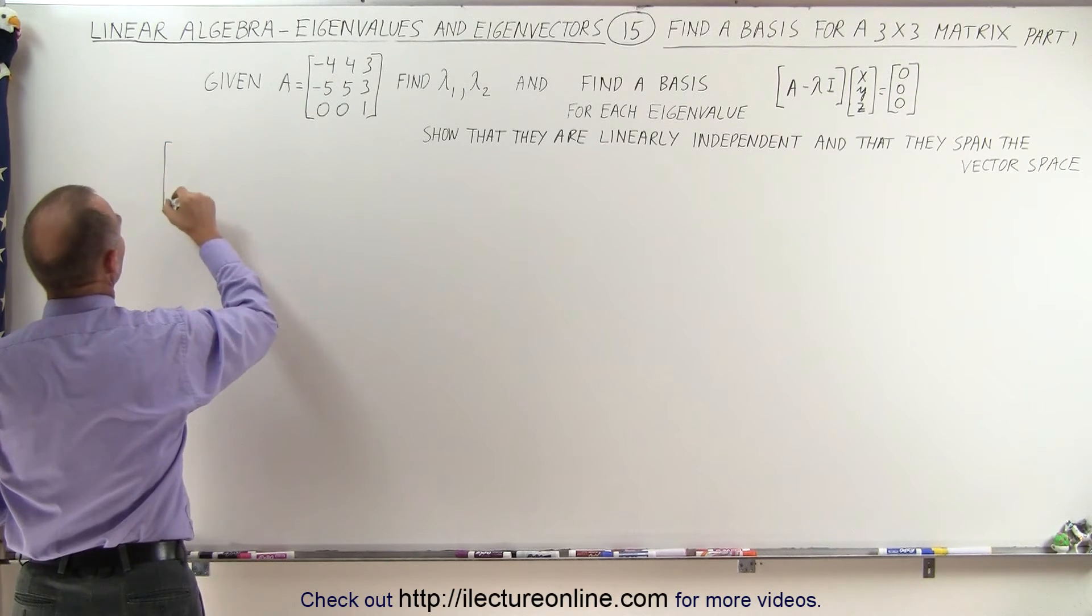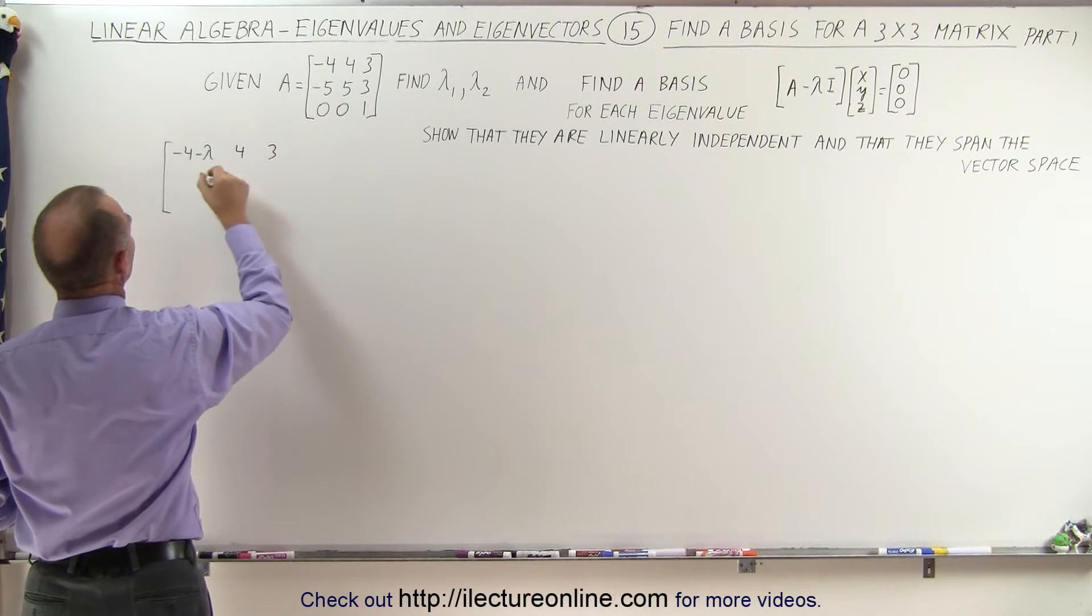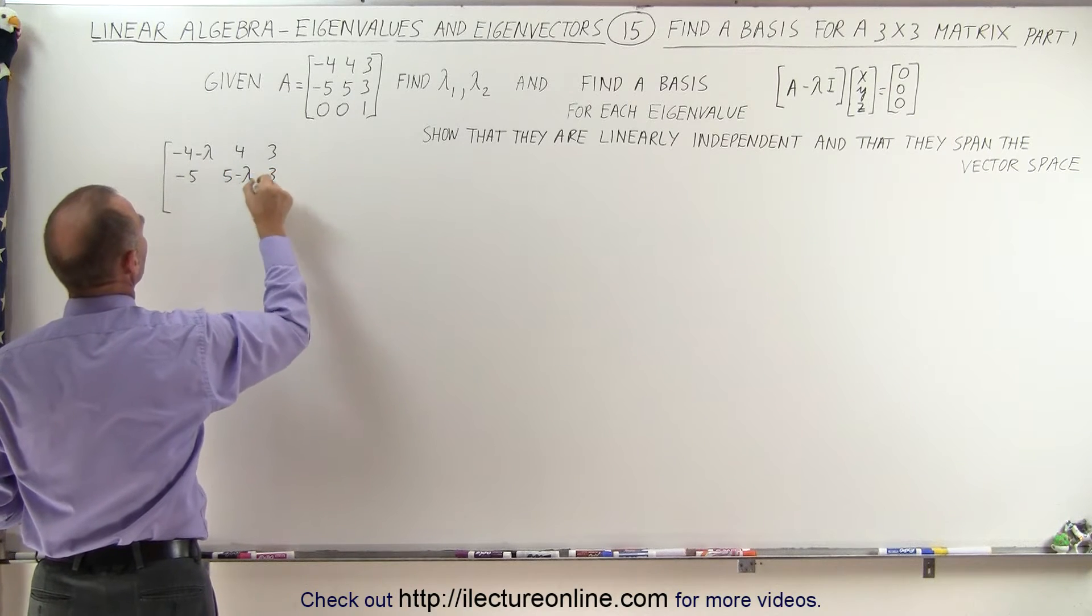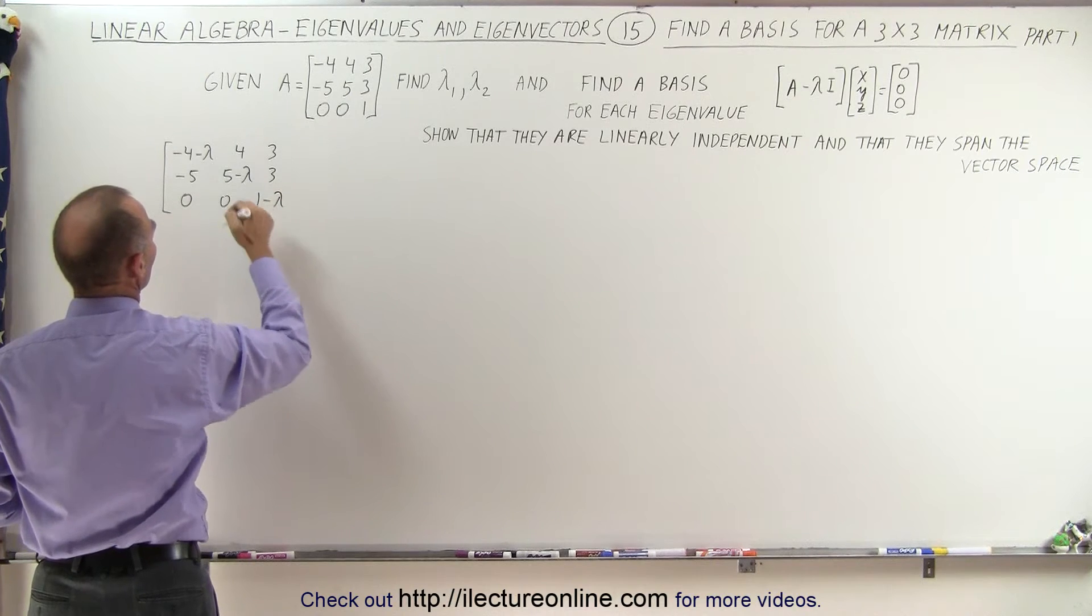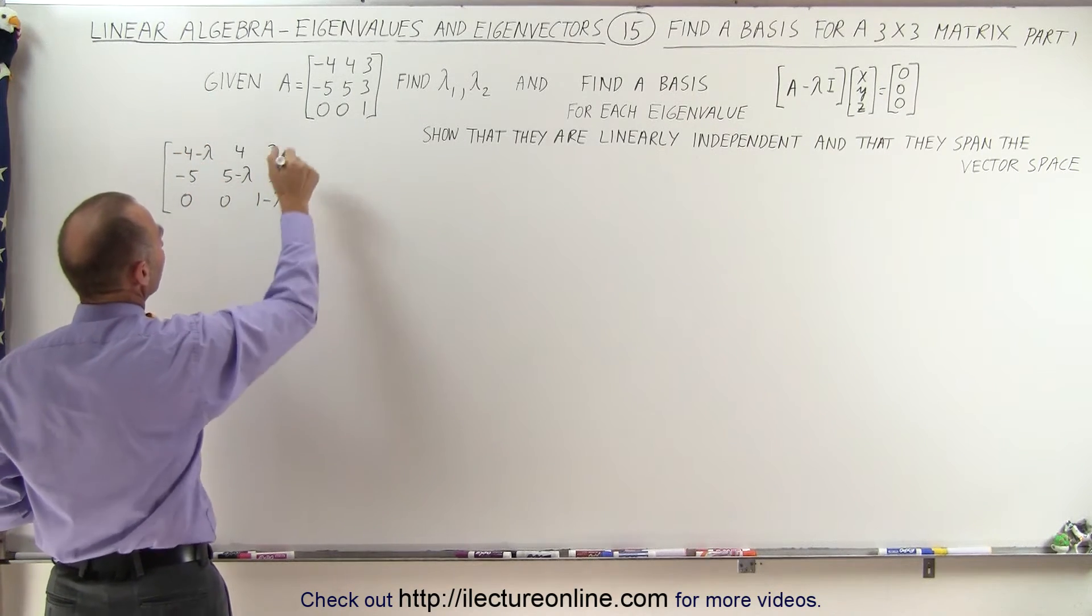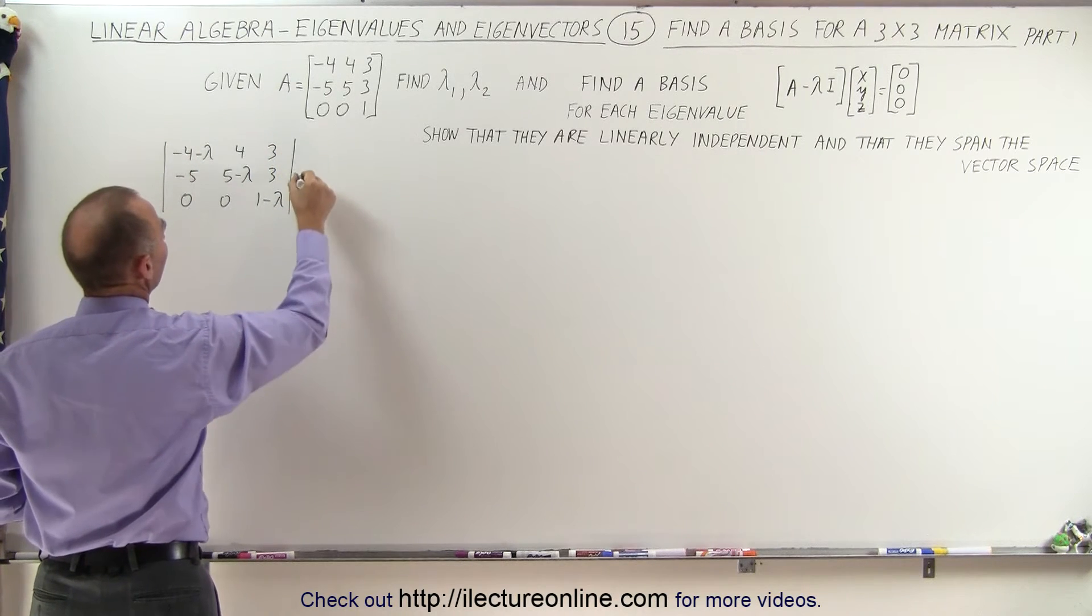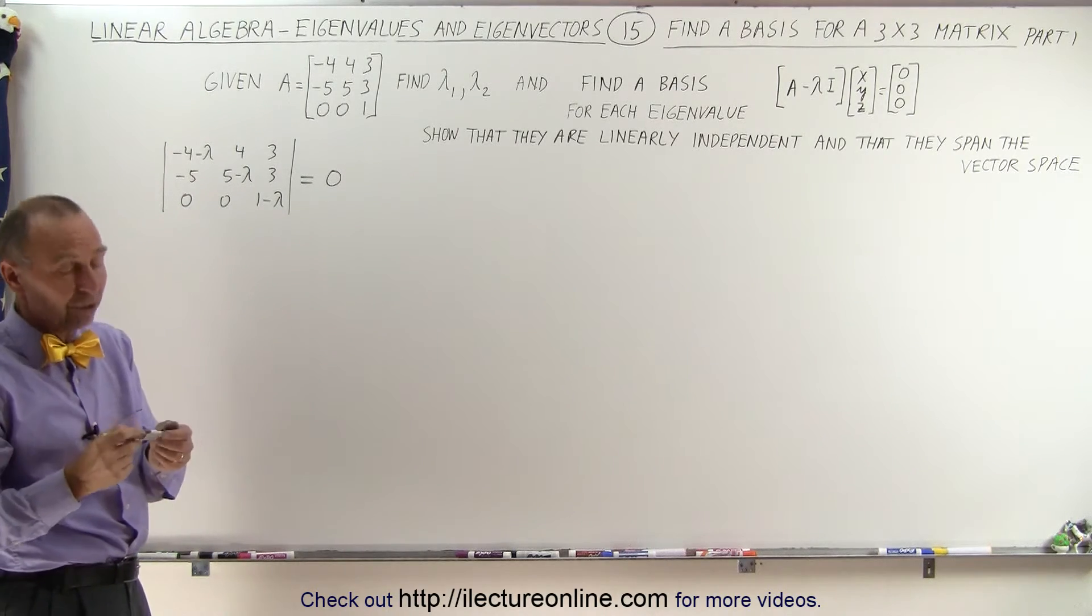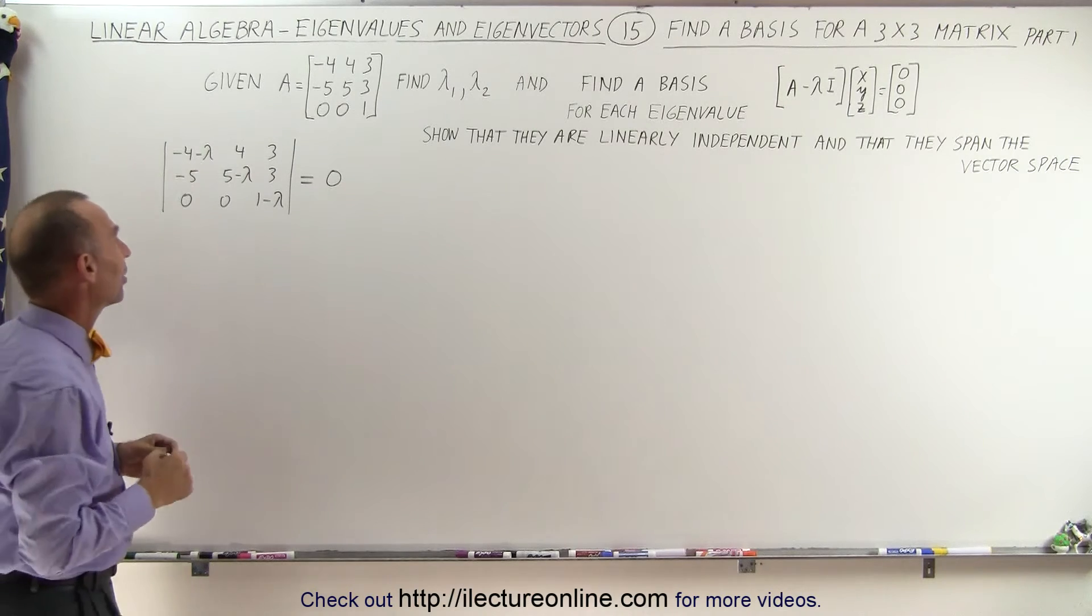I'm going to take minus 4 minus lambda, 4, 3, minus 5, 5 minus lambda, 3, 0, 0 and 1 minus lambda. So we're subtracting the unknown eigenvalue from each diagonal element, then taking the determinant of that and set it equal to 0 and solve for lambda. Now we should find as many as three different values for lambda. Let's see if that's the case here.